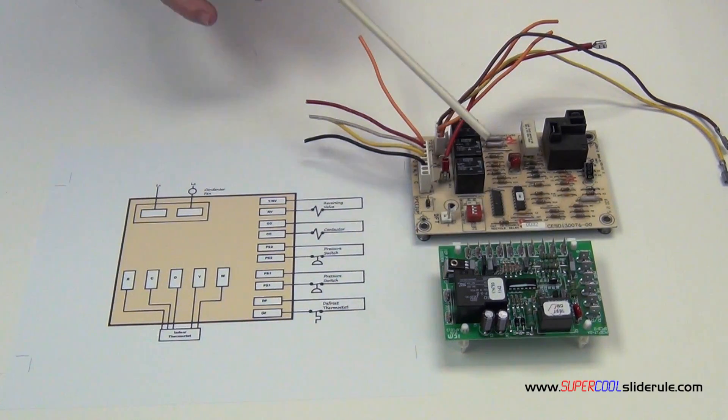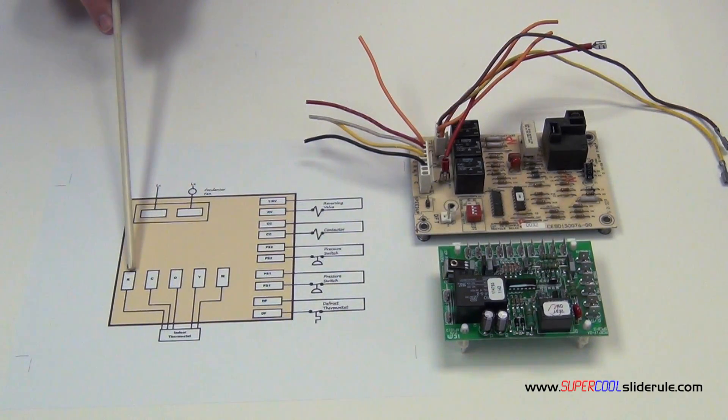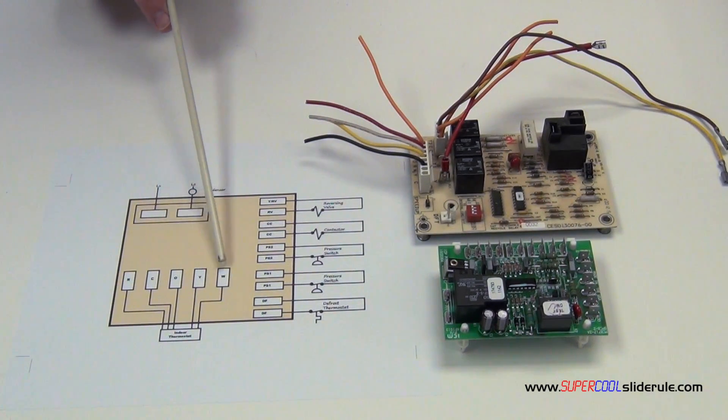No matter what board you're using, they're almost all identical. We have an R, a C, an O, a Y, and a W.